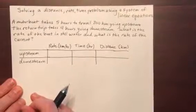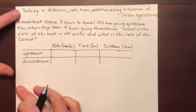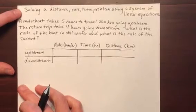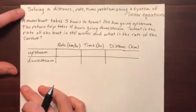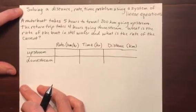Math 95, quiz 6. A motorboat takes five hours to travel 200 kilometers going upstream. The return trip takes four hours going downstream.